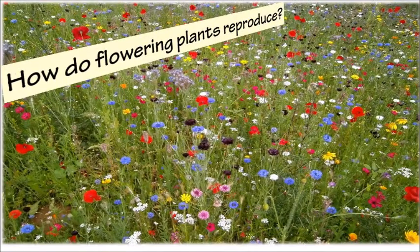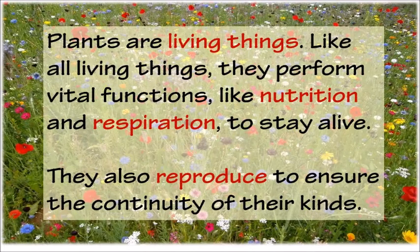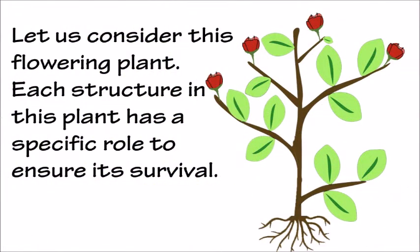How do flowering plants reproduce? Plants are living things, and like all living things, they perform vital functions like nutrition and respiration to stay alive. They also reproduce to ensure the continuity of their kinds. Let us consider this flowering plant. Each structure in this plant has a specific role to ensure its survival.